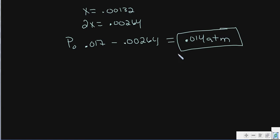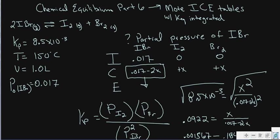Now if you want the partial pressures of the other species: since I₂ and Br₂ each had a change of just plus x and zero initial concentration, their partial pressures at equilibrium are both equal to x, which is 0.00132 atm. So P(I₂) = P(Br₂) = 0.00132 atm. This shows how to combine an ICE table with a Kp equilibrium expression — and this approach works for concentrations the same way.